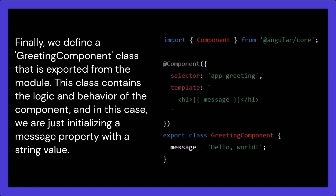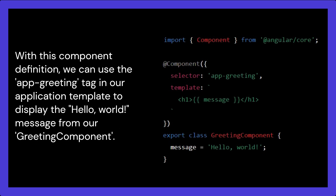Finally, we define a GreetingComponent class that is exported from the module. This class contains the logic and behavior of the component, and in this case, we are just initializing a message property with a string value. With this component definition, we can use the app-greeting tag in our application template to display the 'Hello, World' message from our GreetingComponent.